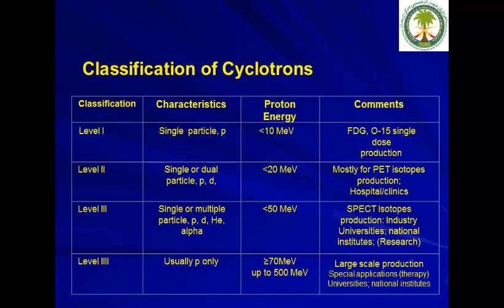How do we classify cyclotrons? I classify them into four different levels. Level 1 is a single-particle cyclotron accelerating protons only, usually less than 10 MeV, used for FDG or oxygen-15 production in single doses. Level 2 is a single or dual particle cyclotron — proton or deuteron — usually less than 20 MeV, mostly producing PET radioisotopes, typically located in hospital and clinical settings.